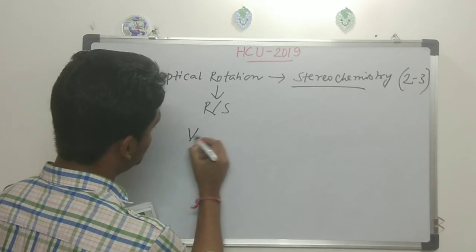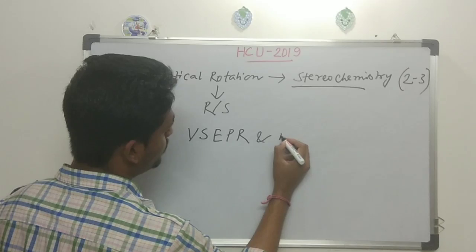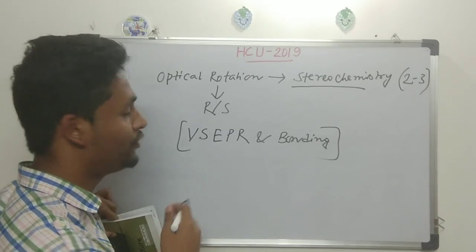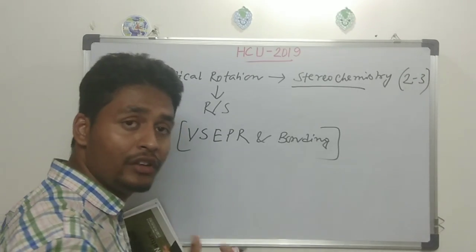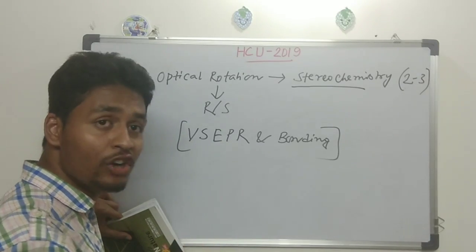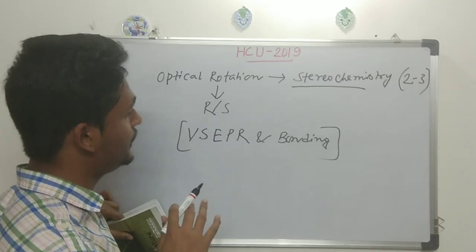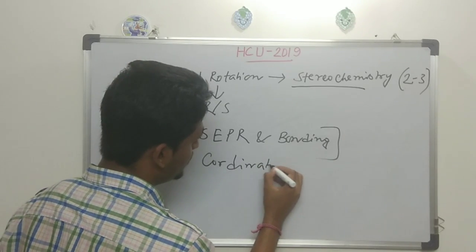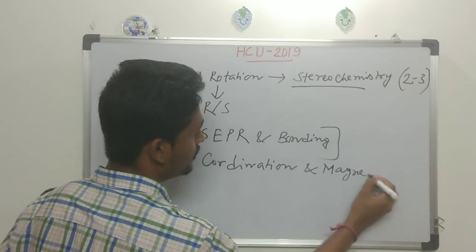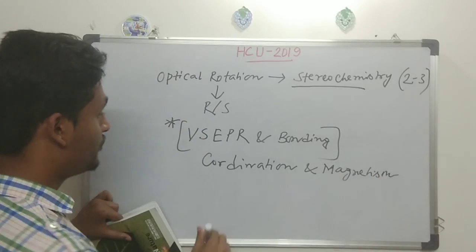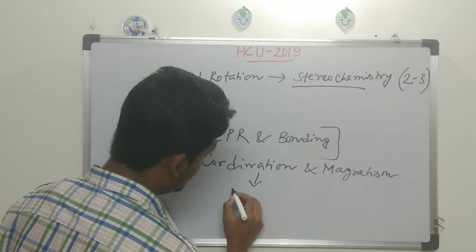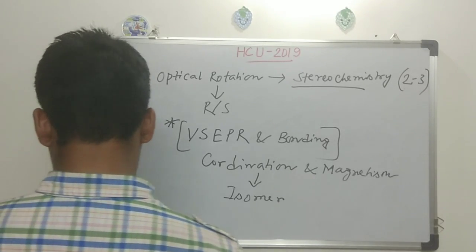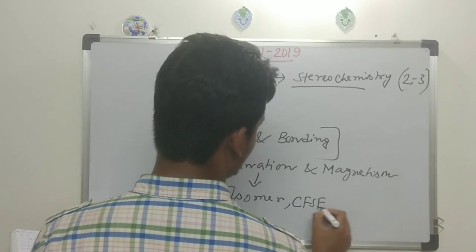From inorganic, chemical bonding as a whole is a very important topic for every exam. VSEPR — they give a molecule and ask about structure or acidity order. A huge number of questions come from VSEPR and bonding. Coordination chemistry and magnetism are related — the key things to study are the number of isomers and CFSE (crystal field stabilization energy) values from coordination chemistry.